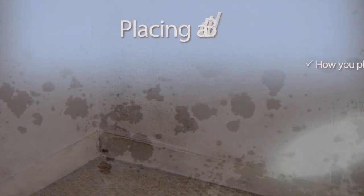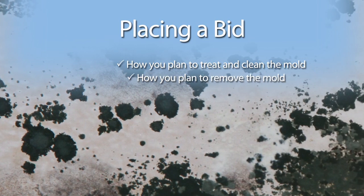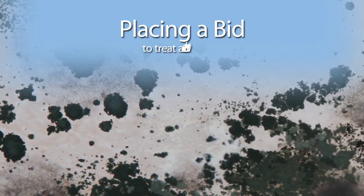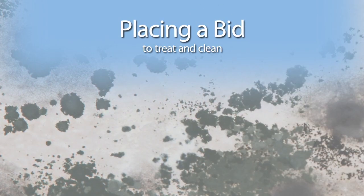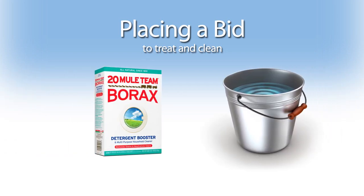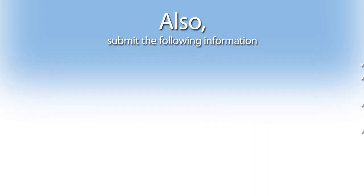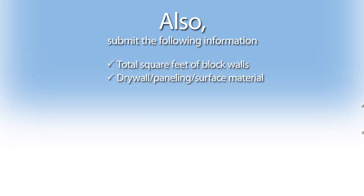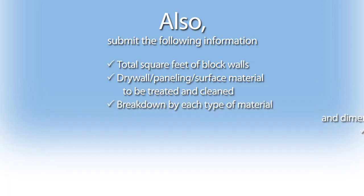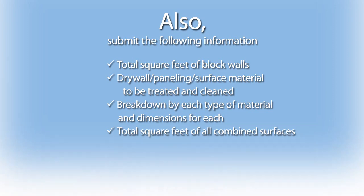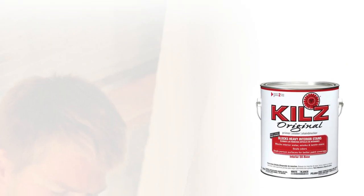When placing a bid, report how you plan to treat and clean the mold, as well as how you plan to remove it. For example, a bid to treat and clean indicates that you will wash the affected area with a soap and water solution, and then spray with bleach or antimicrobial solution. You will also need to submit total square feet of block walls, drywall, paneling, or other surface material to be treated and cleaned, a breakdown by each type of material and dimensions for each, and total square feet of all other combined surfaces to be treated and cleaned, such as cupboards or baseboards.